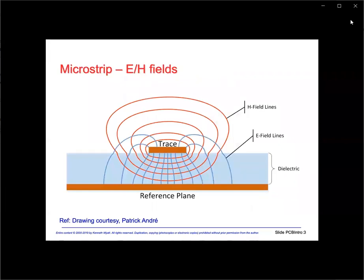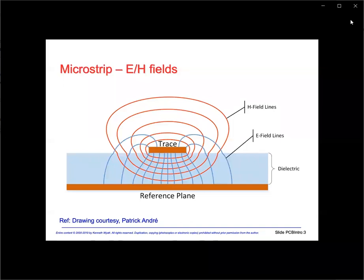This is the cross section of a standard microstrip. You can see the H field flux wraps around the trace, while the E field is mainly concentrated between the trace and return plane. The actual signal in the form of an electromagnetic wave travels through the dielectric space between the trace and return plane. The trace merely serves as a waveguide and guides the path of the signal energy.